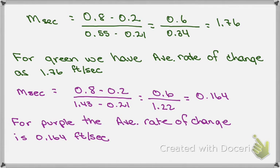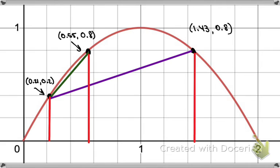So for the slope of the secant line, the green, it's 0.8 minus 0.2, because those were a change in the y. And then 0.55 minus 0.21, that's a change in the t. And hopefully I did my arithmetic correct, and I came up with 1.76. So the average rate of change for that green secant line was 1.76 feet per second. So that means we would have this guy over here. Average rate of change here would be 1.76 feet per second.